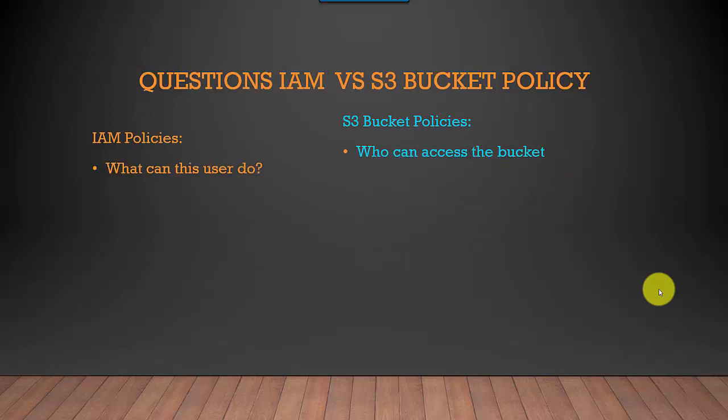A useful way to decide: if you're asking 'what can this user do?', IAM policy is the better place to define access. If you're thinking 'who can access this bucket?', it's better to define the policy in an S3 bucket. The kind of question you're asking can give you an indication of what you need to use.